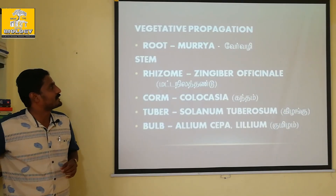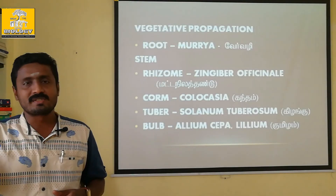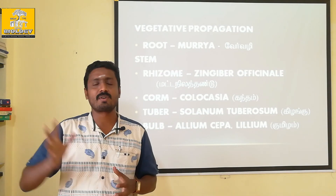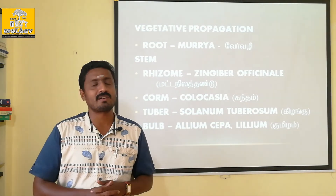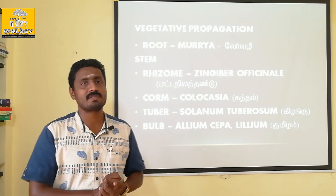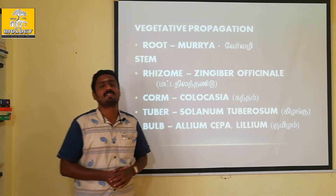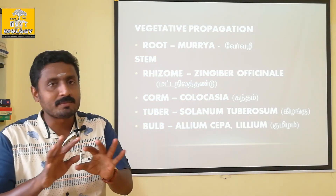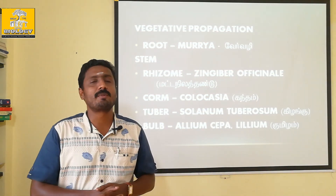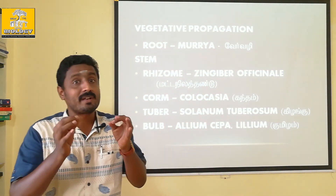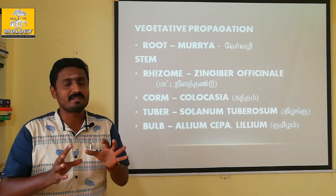We can see the advantages and disadvantages of vegetative propagation. We can use the root system as an artificial method. Vegetative propagation is quite natural — it is a natural reproductive method.